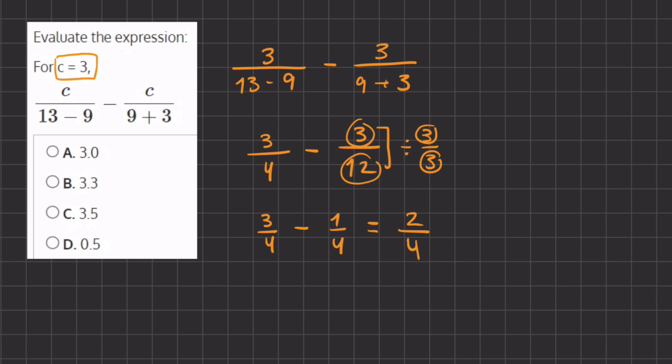Now we have to simplify this fraction, and we can do so by dividing the numerator and denominator by 2 because both are equally divisible by 2, and we are left with one-half. Now all of our answers are written in decimal form, so we need to convert this half into a decimal, and that is going to be 0.5. So our answer for this problem is going to be D or 0.5.